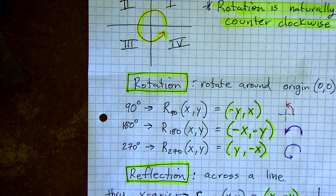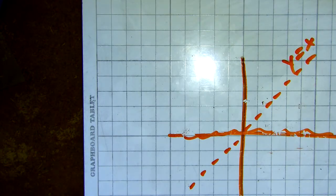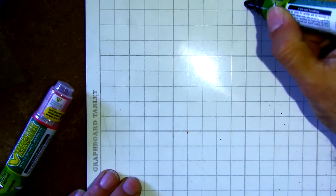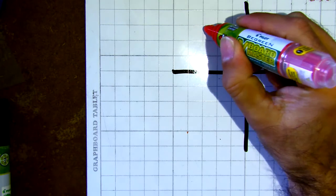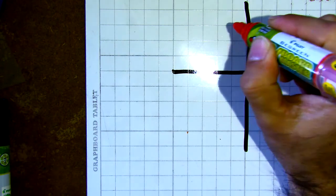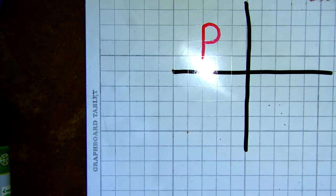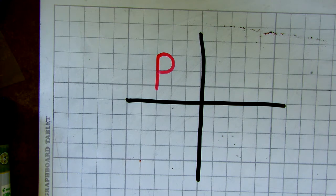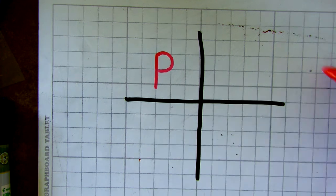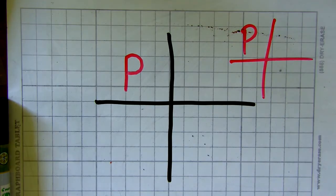Now if I'm looking at a reflection, we have a few different options. Let's see how well we understand this. Let's put the letter P. If I reflect this across the y-axis, what quadrant is the P going to end up in? Maybe even do a rough draft — put the P and draw where it's going to go and how it's going to be oriented.